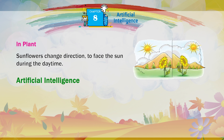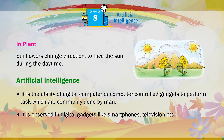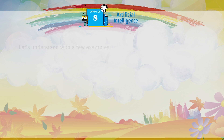Artificial Intelligence is the ability of digital computers or computer-controlled gadgets to perform tasks which are commonly done by man. It is observed in digital gadgets like smartphones, television, etc. Let's understand with a few examples.